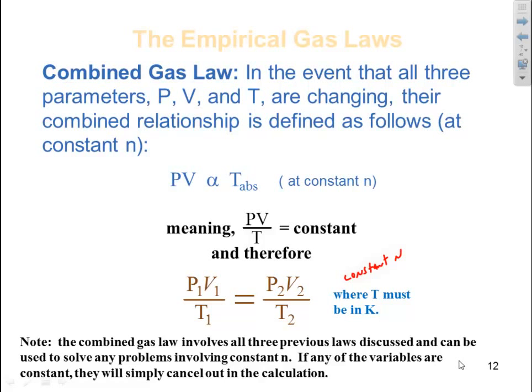So all your equations are basically here. For instance, if you were at constant n and constant temperature, T1 cancels out because it's a constant, and you have P1V1 equals P2V2 — that's Boyle's Law.